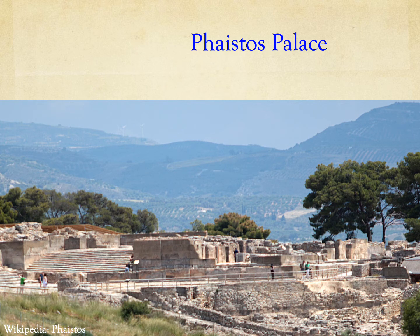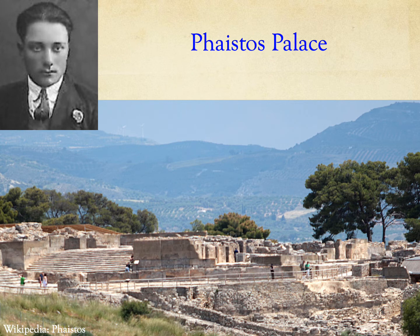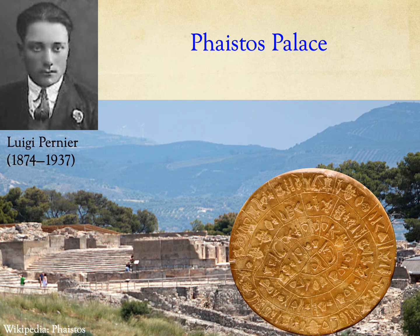The Phaistos Palace was discovered only in the early 20th century. During an excavation in 1908, Luigi Pernier, the famous Italian archaeologist, found the Phaistos disk, which is the longest Minoan inscription, with a total of 241 signs in a unique script.